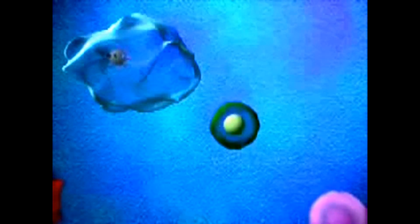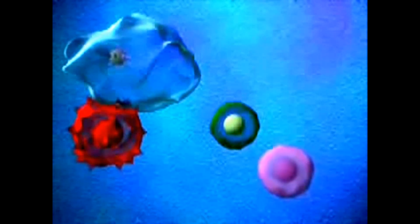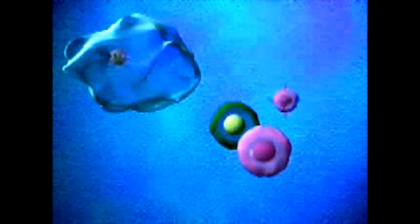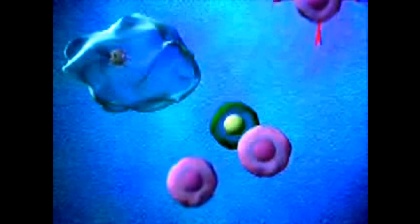Together, the macrophages and the cells of the acquired immune system join the fight. Using the information transmitted from the macrophages, B-cells begin producing antibodies and T-cells, which are specialized cells trained to kill the invaders.